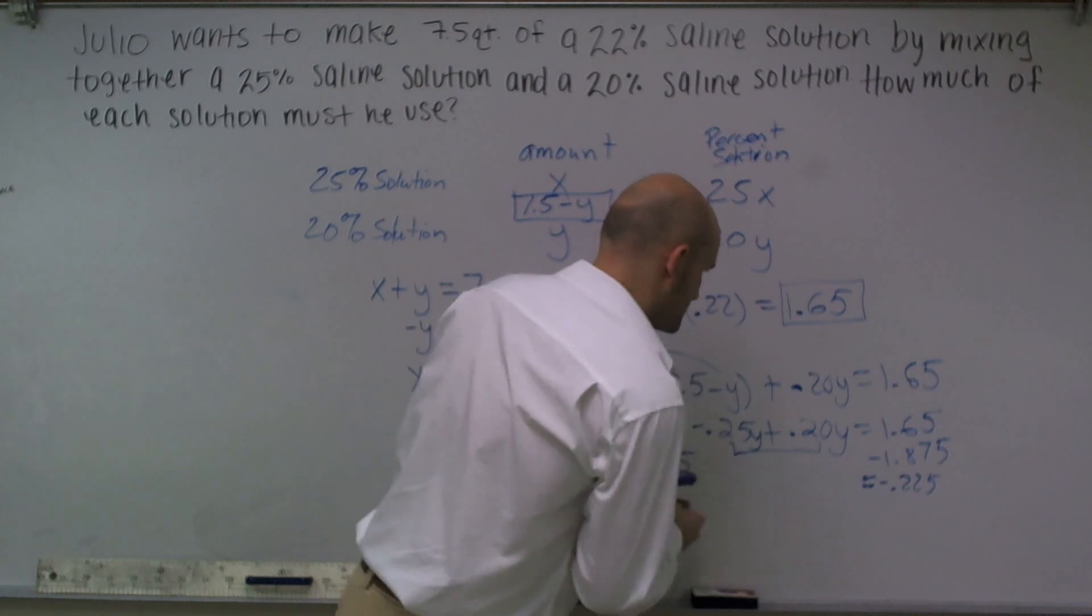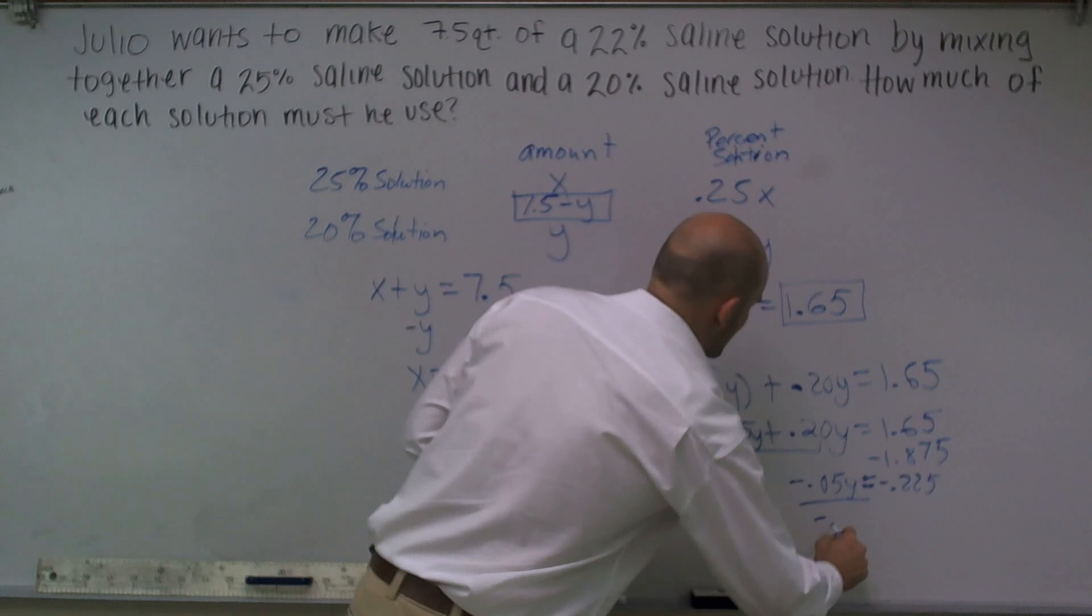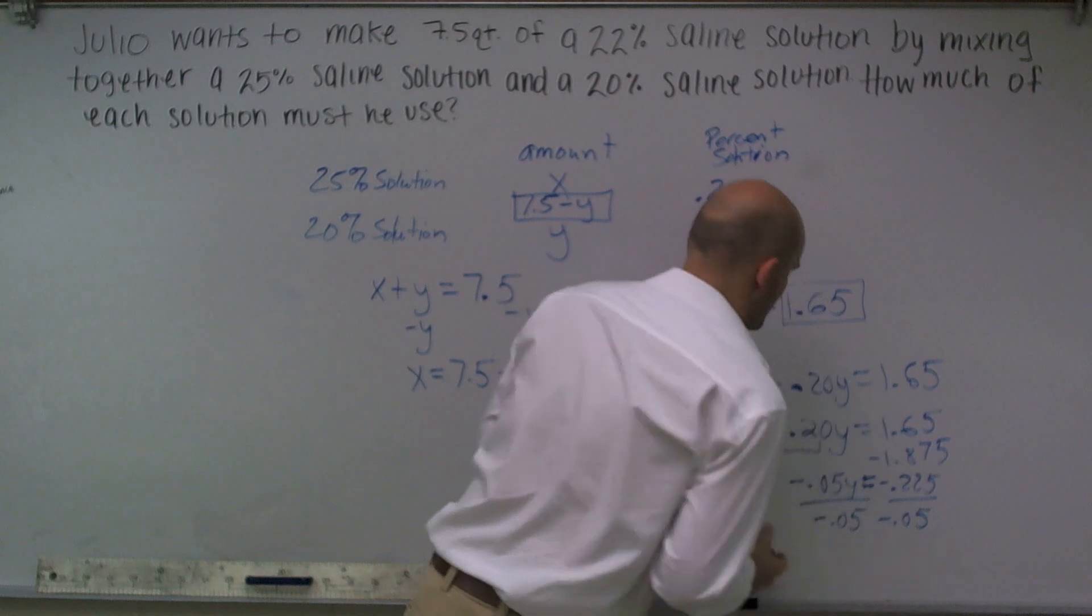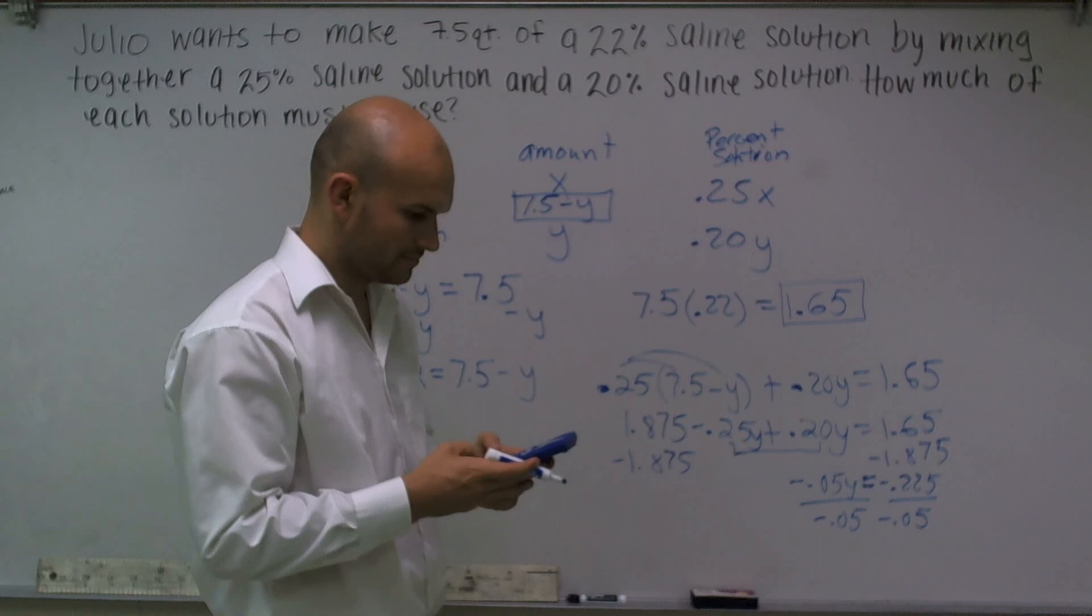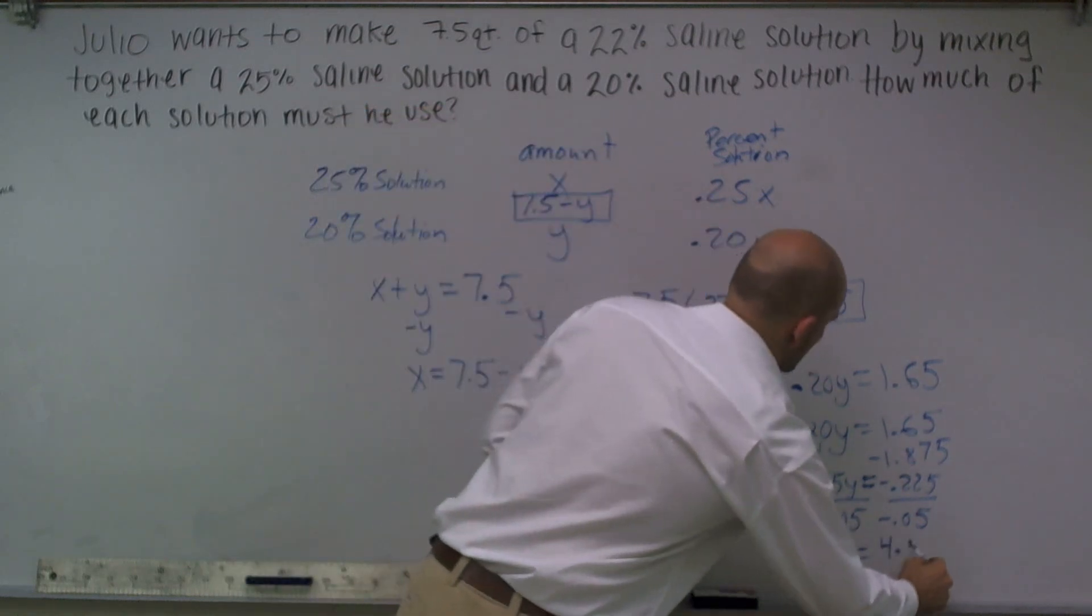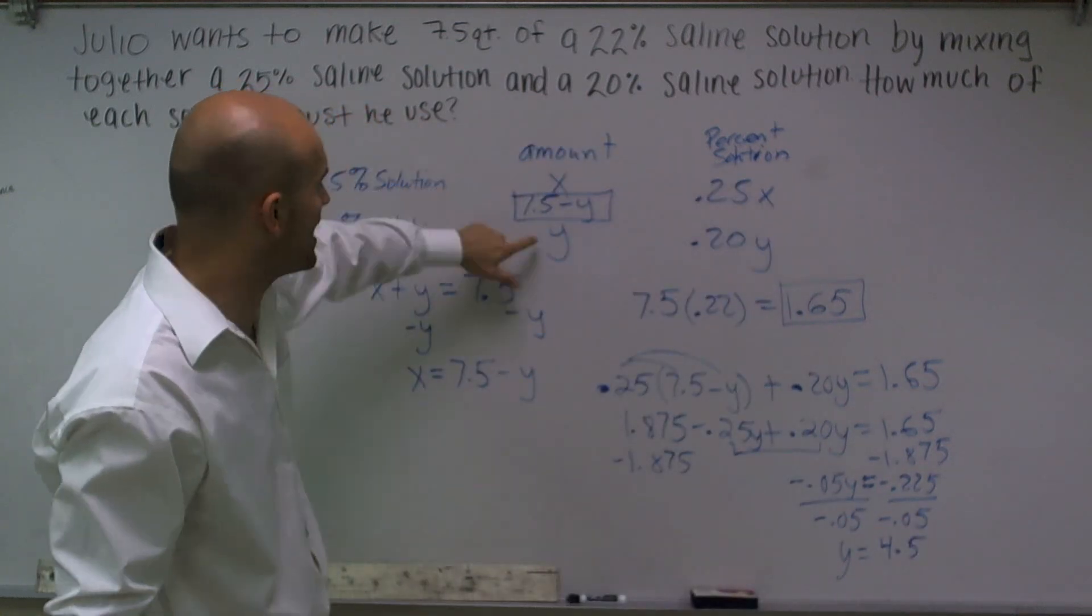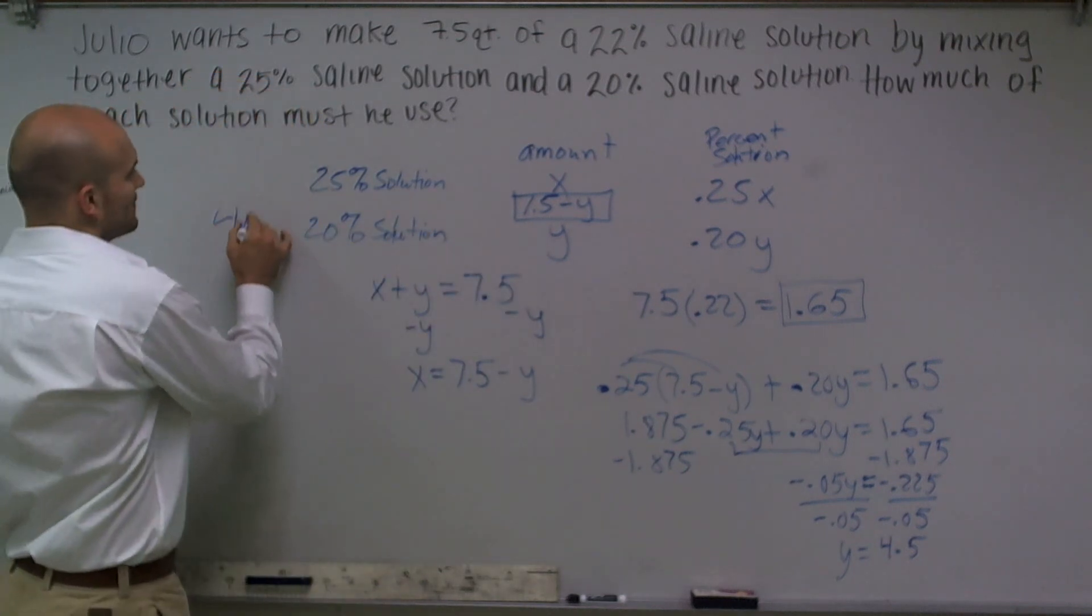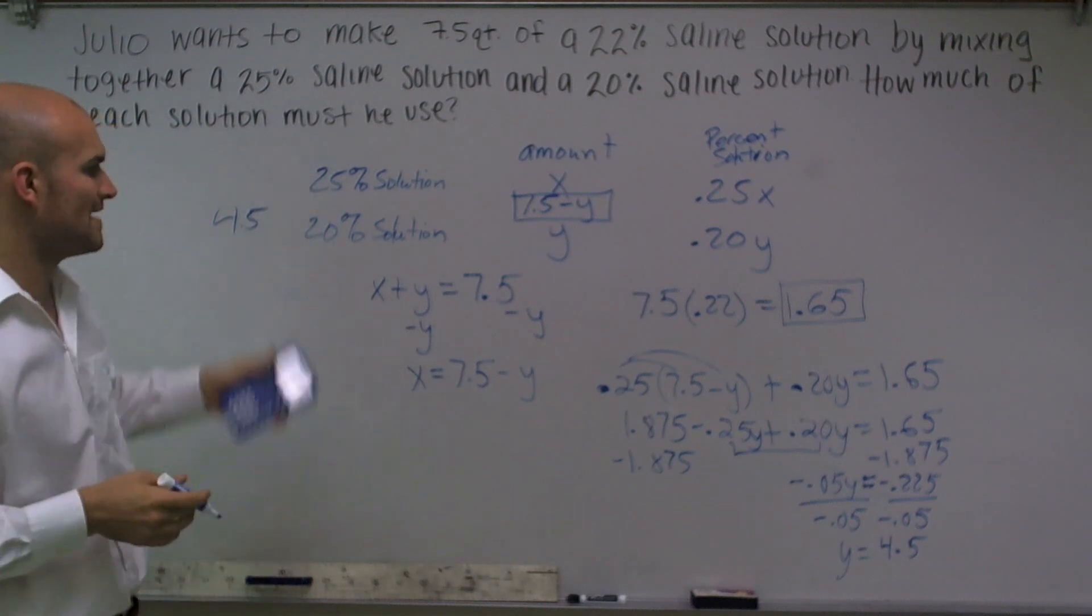Negative .05y divided by negative .05 on both sides, and what I get is y equals 4.5. So therefore, the amount of solution for my y is going to be 4.5. So I'm going to use 4.5 of my 20% solution. How much of my x, of my 25% solution am I going to have to use?